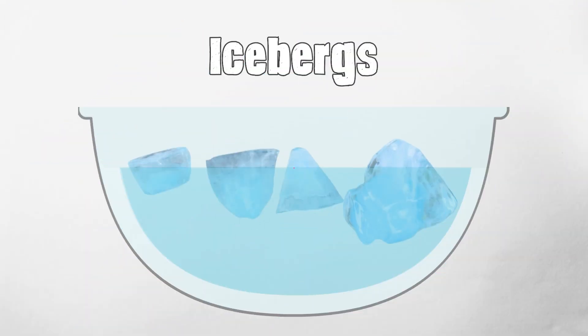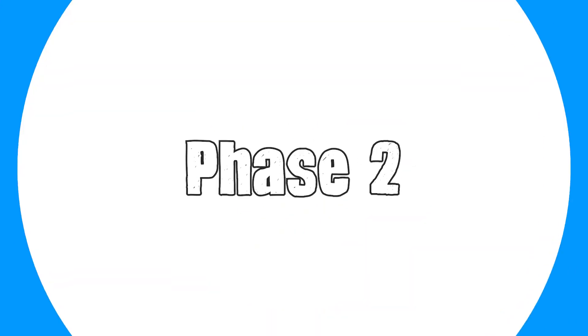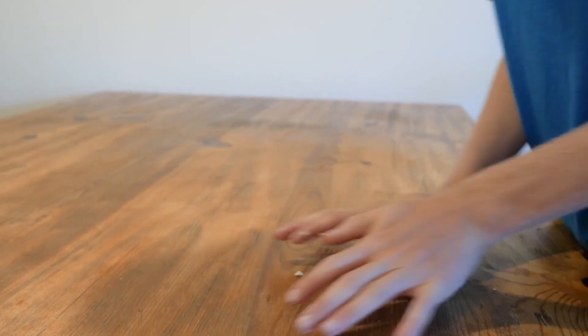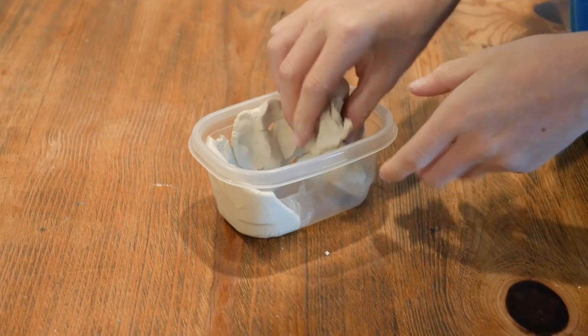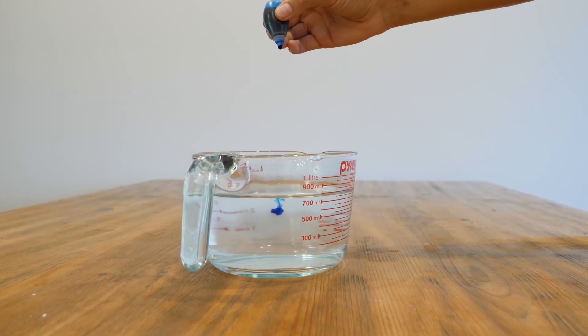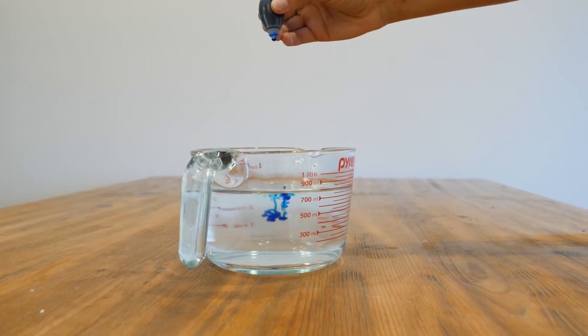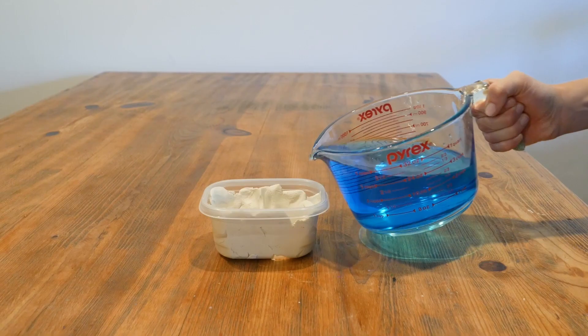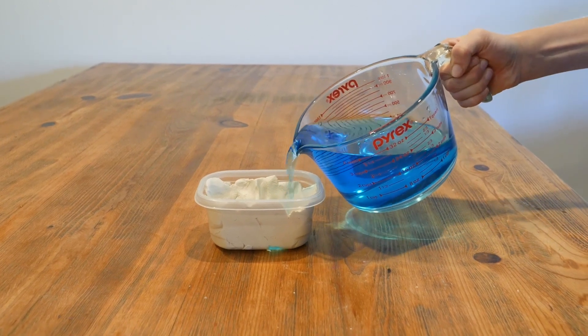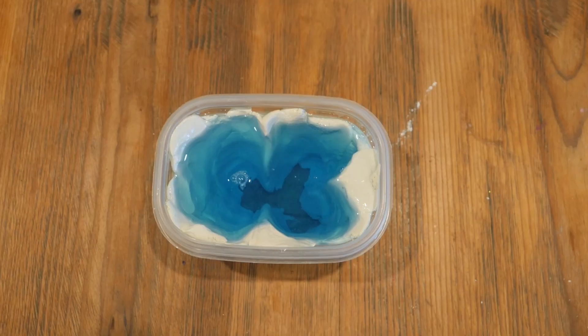Phase two: begin construction. Gather the materials you would like to use and start building your iceberg mold. Check out the instructions for ideas and suggestions. Fill your iceberg mold with water and freeze overnight.